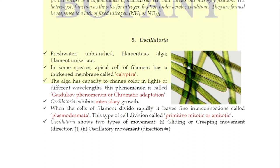If we talk about the growth of Oscillatoria, it shows intercalary growth. This means that division occurs in the slide region — it divides toward the apical side and also toward the basal side. Since division occurs on both sides, this type of growth is called intercalary type of growth.